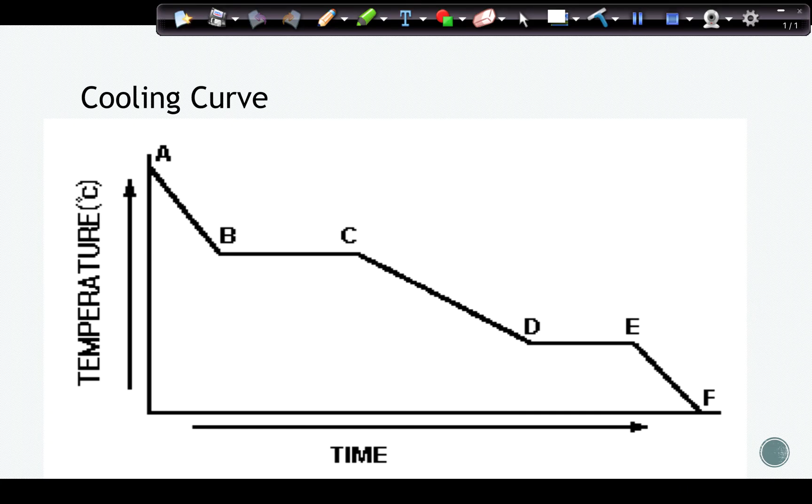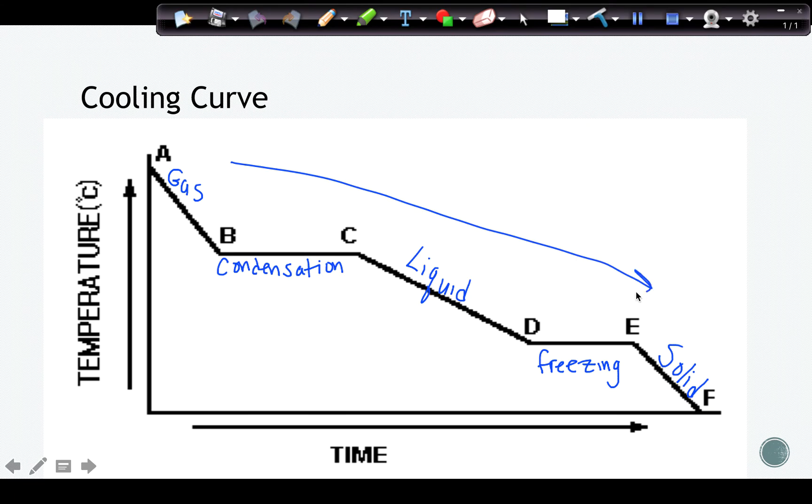Exothermic phase changes release energy, and they are found on the cooling curve. So when we're talking about the cooling curve, we're starting at the highest energy phase and going down progressively. So since this has three slanted lines, we're going to be starting at gas, going down to liquid, and finally, the last phase would be solid. That means that this first phase change would be condensation, and this second phase change would be freezing or solidification. Notice this is going downhill.